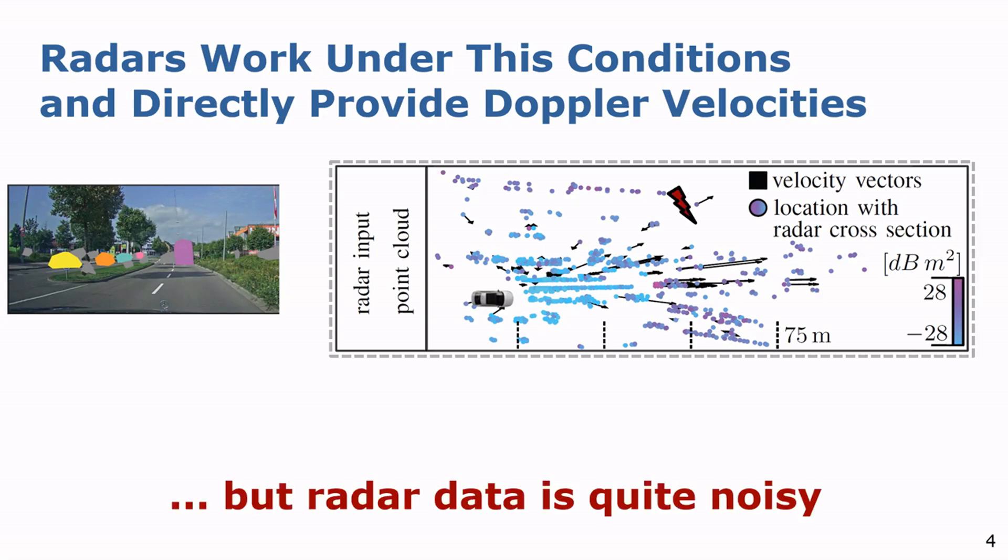A serious drawback, however, is that the radar scans are affected by noise due to egomotion, sensor noise and multipath propagation, as indicated by all the measurements with Doppler velocity vectors besides the actual objects, as you can also see in the reference image.